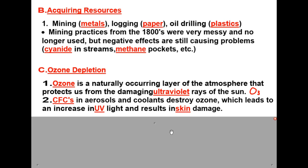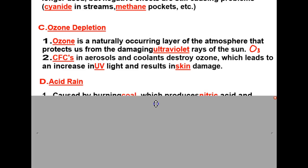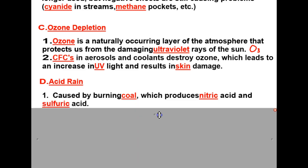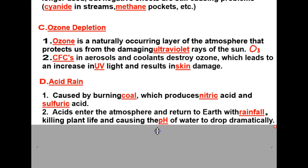Air conditioners, refrigerators, and freezers all contain these harmful compounds. Acid rain is caused by burning coal or other fossil fuels, which produces nitric acid and sulfuric acid. Nitrogen compounds and sulfur compounds go into our atmosphere, combine with water vapor, and produce nitric and sulfuric acid. These acids enter the atmosphere and return to the earth with rainfall, killing plant life and causing the pH of water to drop dramatically.